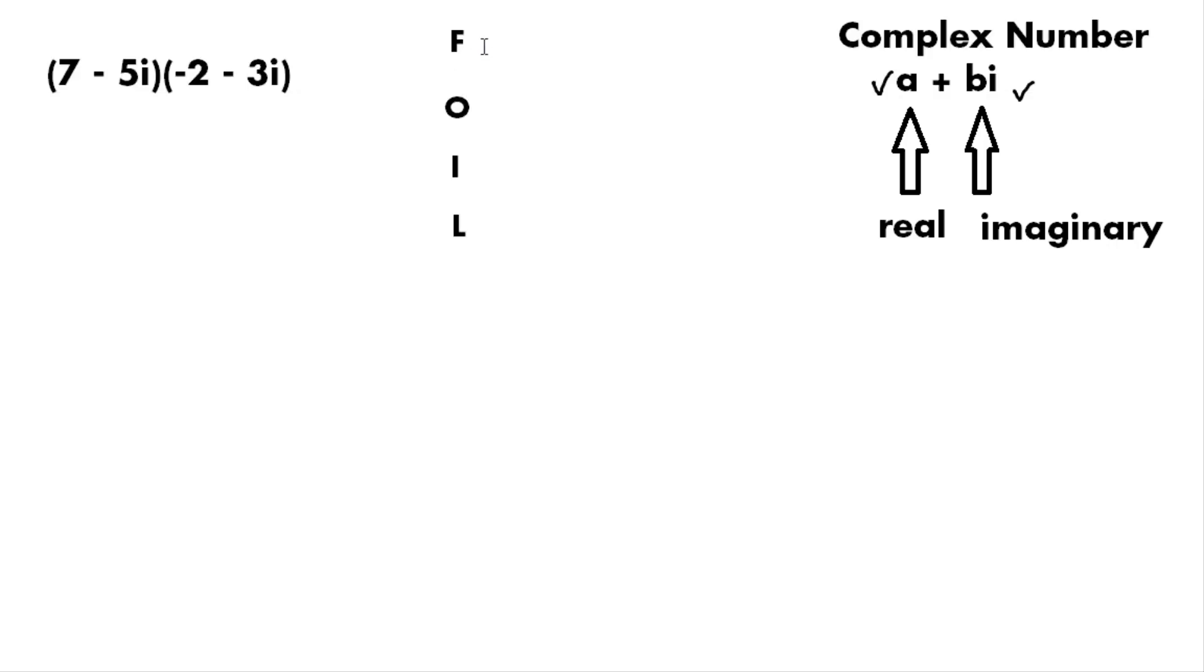So the F in FOIL represents first. The O in FOIL represents outer or outside. The I represents inner or inside. And the L represents last. This acronym is simply a way to help guide us to make sure that we do all the multiplications that need to happen here. So there are four things that will be multiplied.